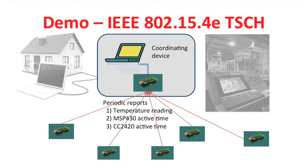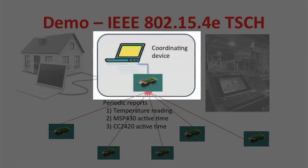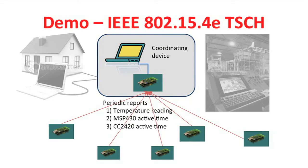This demo shows sensor devices that can be spread over home, building, or factory. They periodically report their sensor reading data to the coordinating device, allowing the host machine to monitor the environment. In this demo, each TSCH device reports temperature reading every 10 seconds and the active duration of the MSP430 microcontroller and CC2420 radio, showing the power performance of the TSCH device.